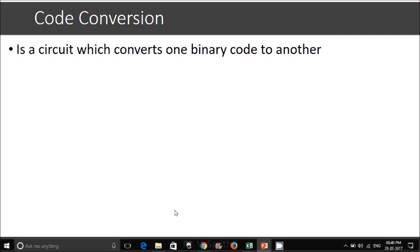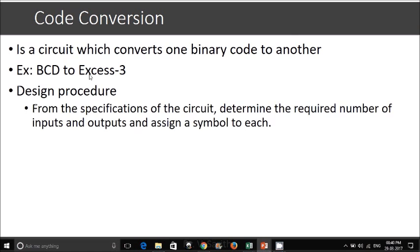First example in the code conversions, we will see which converts a binary code to another. BCD to XS3, we will see as an example. The first step in the design procedure is we are supposed to identify the number of inputs and outputs and assigning a symbol to each.